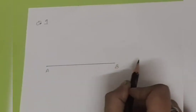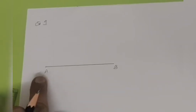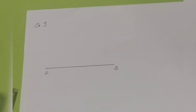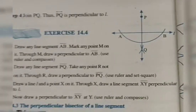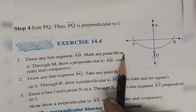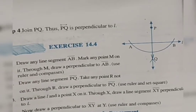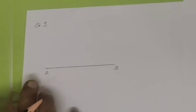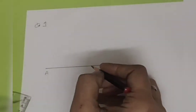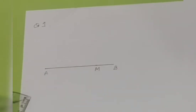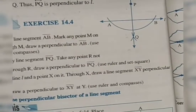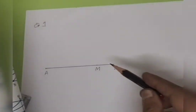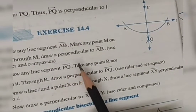I have made two dots here — the endpoints A and B. This is a line segment, not a line. If we need to draw a line, we extend it and put arrows. But it is a line segment. Now the next step is to mark any point M on it. No specific position is given, so anywhere we can mark M — suppose I'm marking it here.